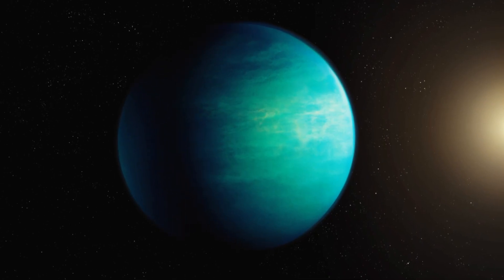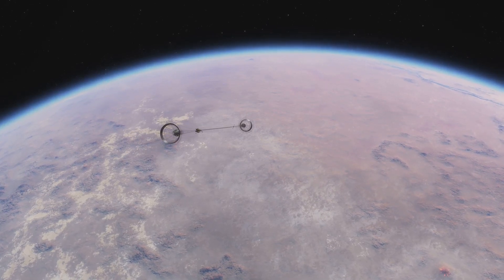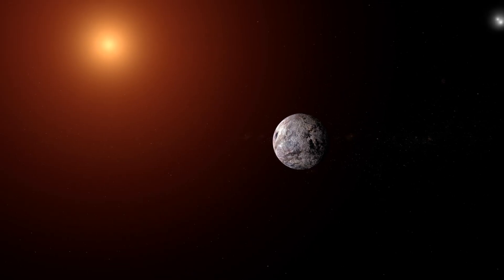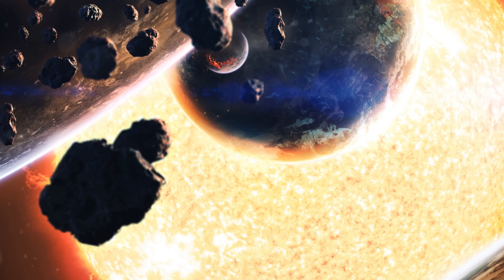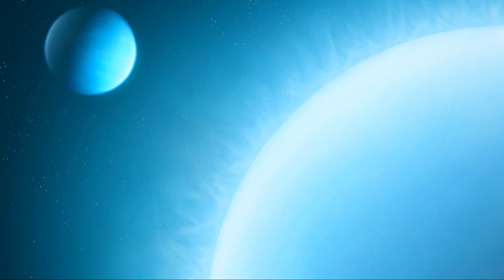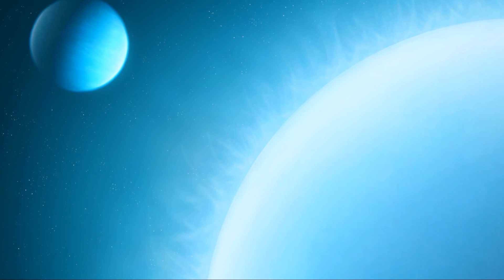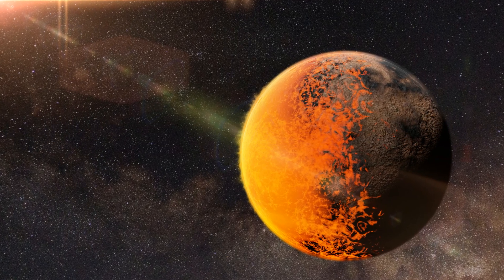The possibility of life on HD 40307 G is a question that has captivated scientists and the public alike. While the planet's location in the habitable zone makes it a promising candidate, there are many other factors that could affect its habitability. The planet's tidal locking, for example, could lead to extreme temperature differences between its day and night sides, making it difficult for life to evolve.